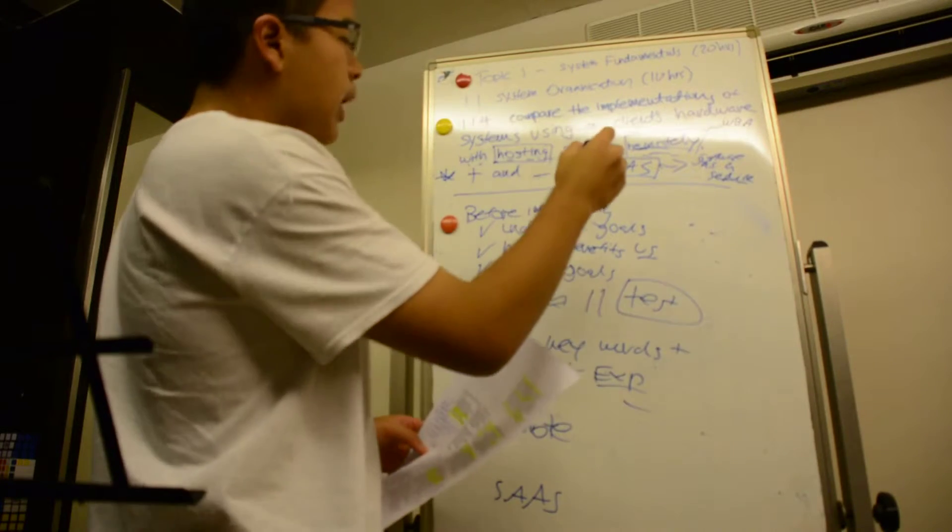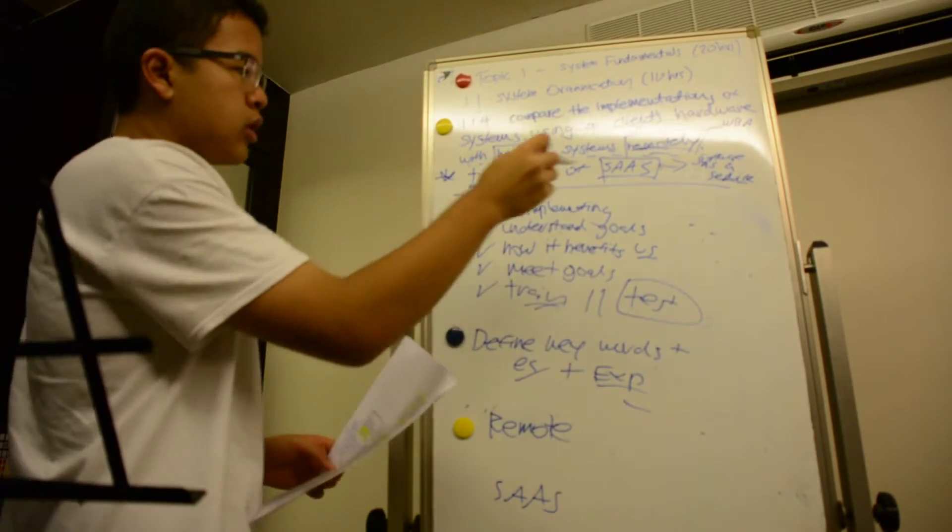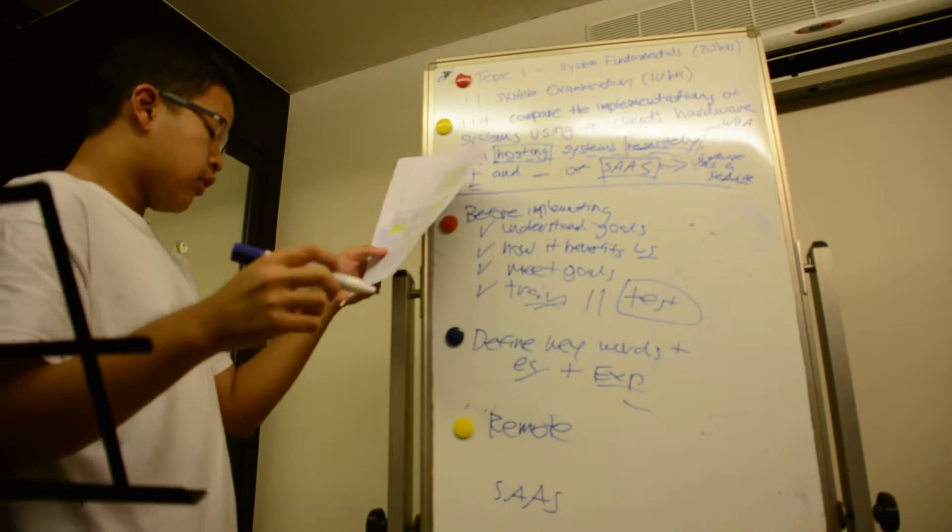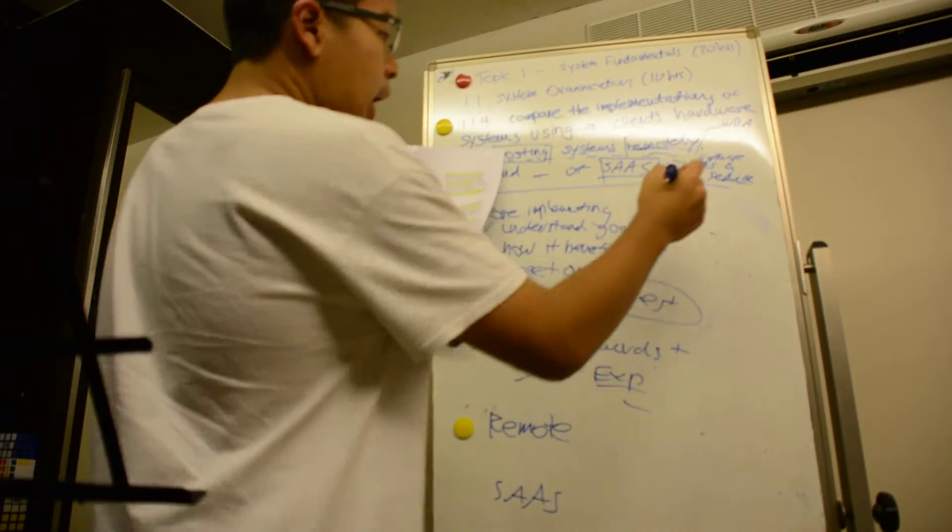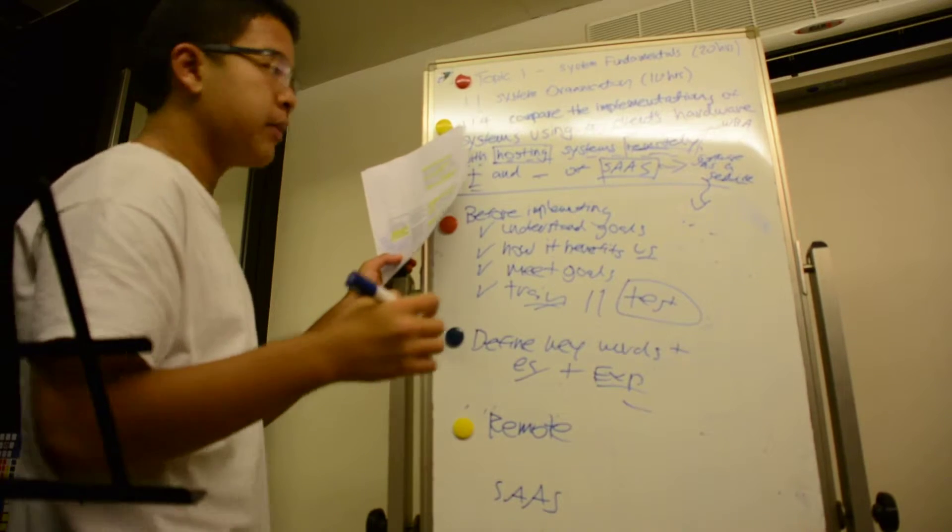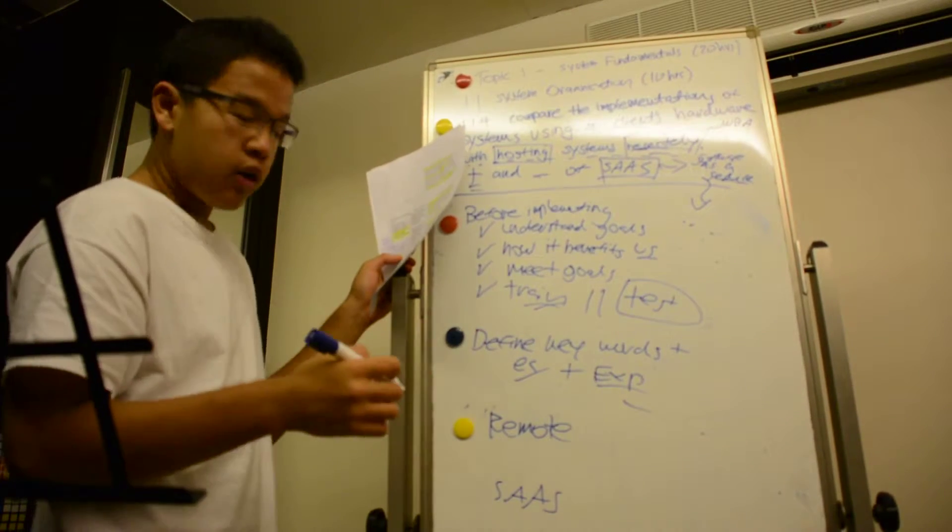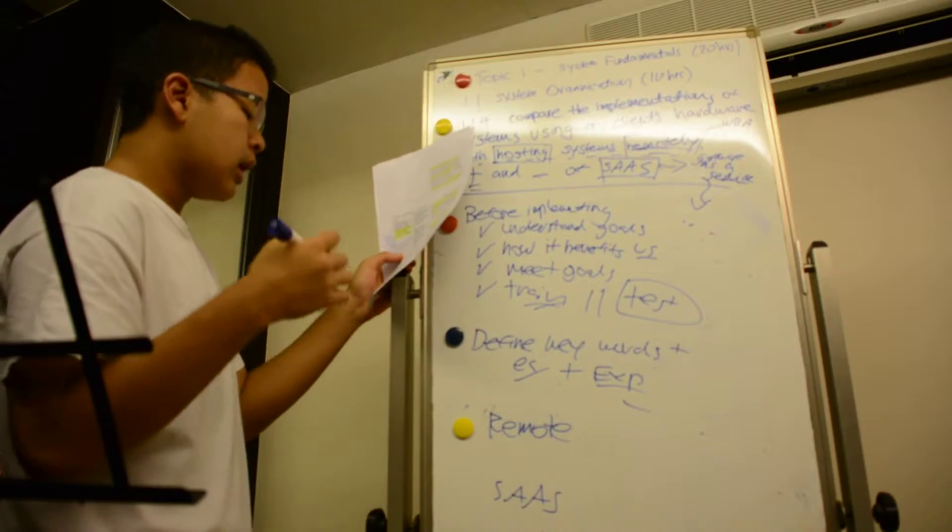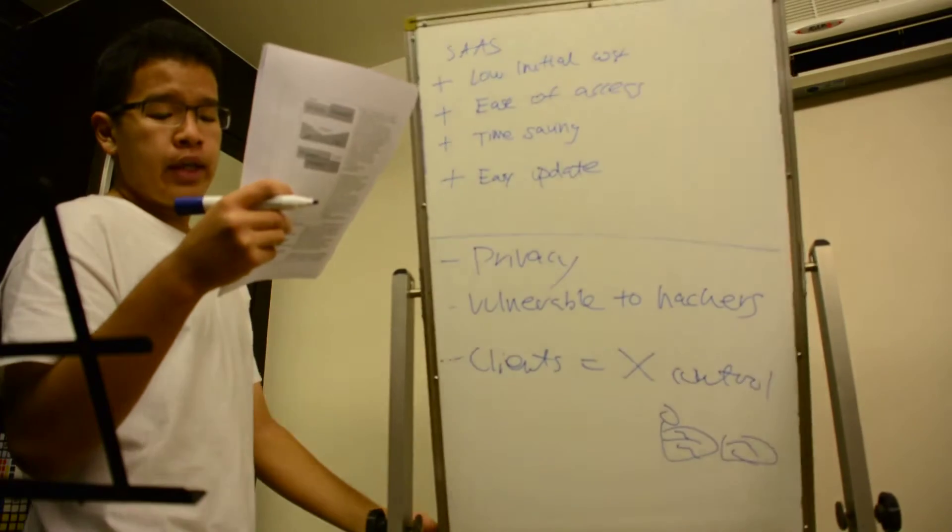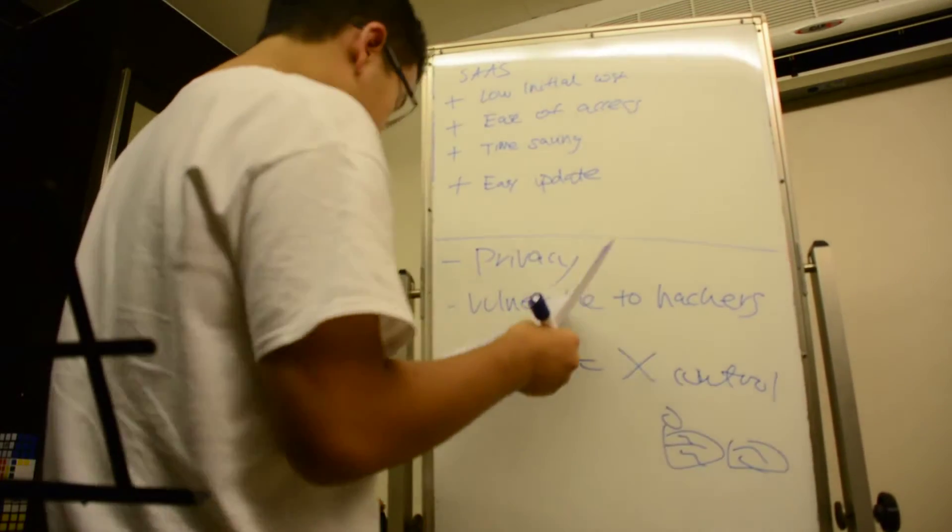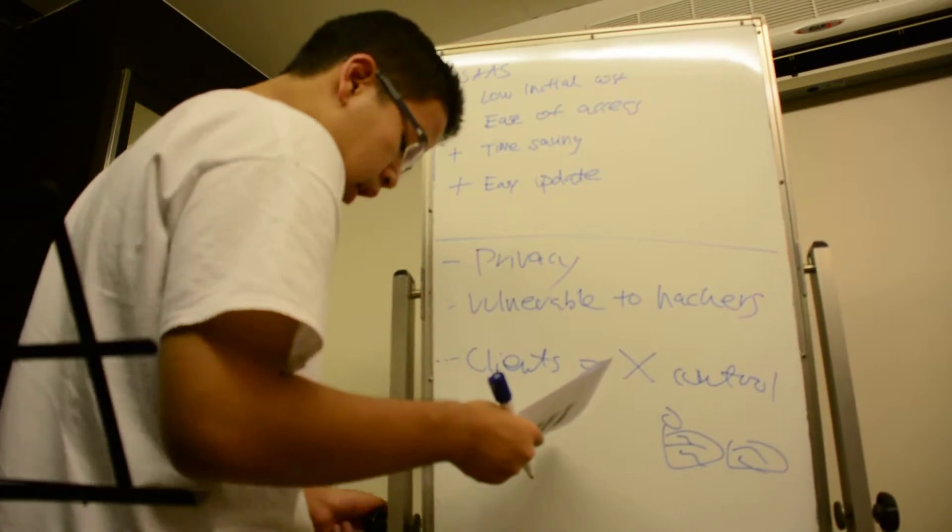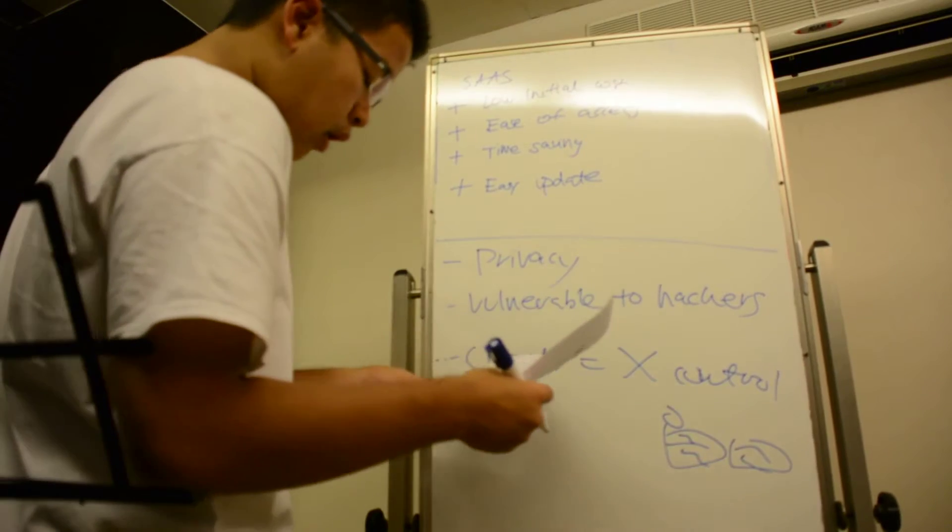And it says the drawbacks and the pros of SAAS which is software as a service. And the definition is renting software on a temporary basis rather than selling the software or the software license. So browser-based software is very easy to distribute.